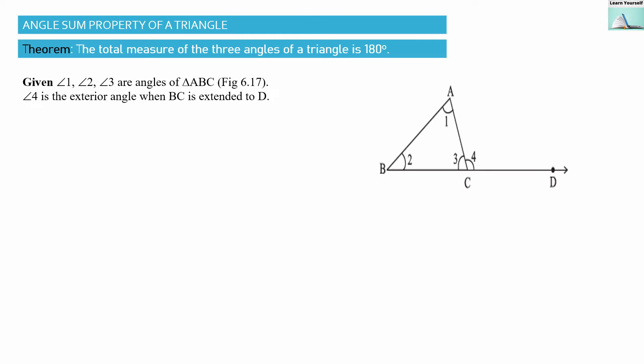Welcome to Learn Yourself. In this video we are going to understand the theorem which states that the total measure of the three angles of a triangle is 180 degrees. This is also known as the angle sum property. The sum of all three angles of a triangle is 180 degrees, and that is what we have to prove here.